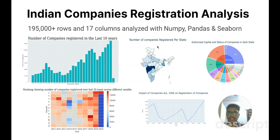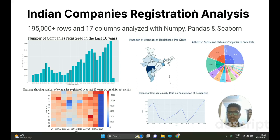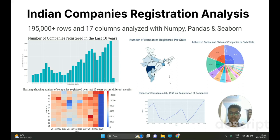This is the Indian Company Registration Analysis — an exploratory data analysis of companies registered in India. I downloaded the dataset from Kaggle, consisting of nearly 200,000 rows and 17 columns. I used Pandas to store, clean, and craft data to gather different kinds of insights. For visualizations, I used Matplotlib, Seaborn, Folium, and Plotly. Key insights: real estate companies were the highest to get registered, Maharashtra state witnessed the highest number of company registrations, and Reliance Jio Group is the largest company in India based on capital.